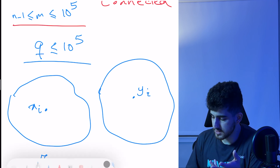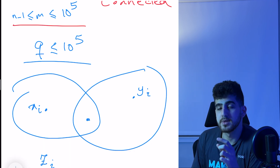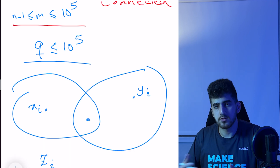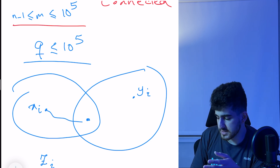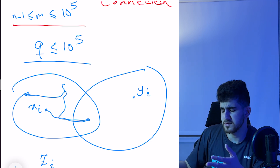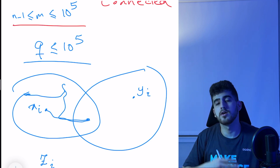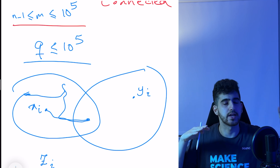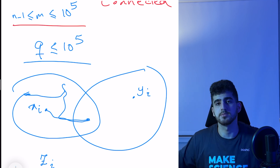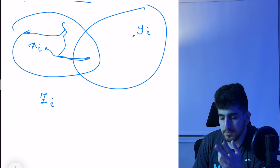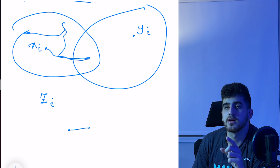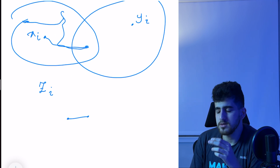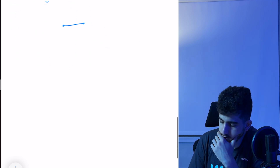Each brother visits some vertices such that together they visit at least Z_i vertices. If both visit the same vertex it is counted only once. They traverse edges and are allowed to visit any vertex or edge multiple times. We want to minimize the maximum index of an edge they will use.